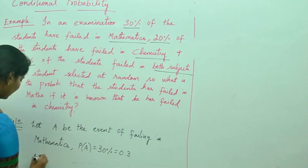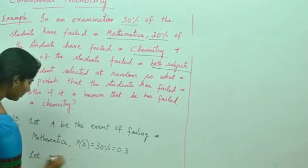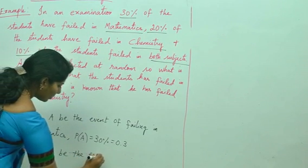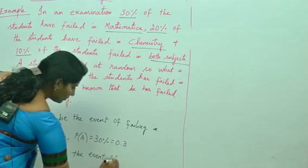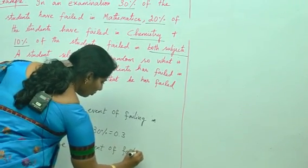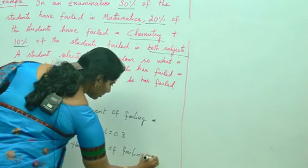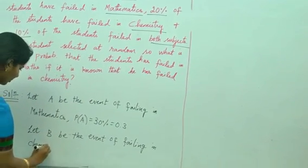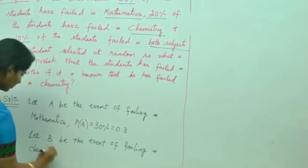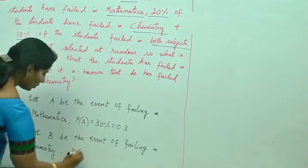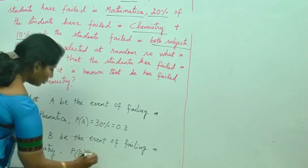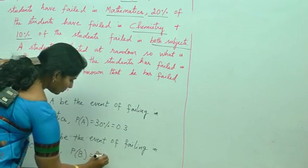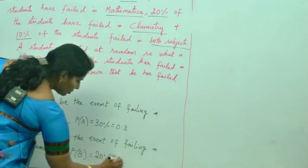And similarly, let B be the event of failing in chemistry. That is P of B equals what they have given, 20%, which is 0.2.